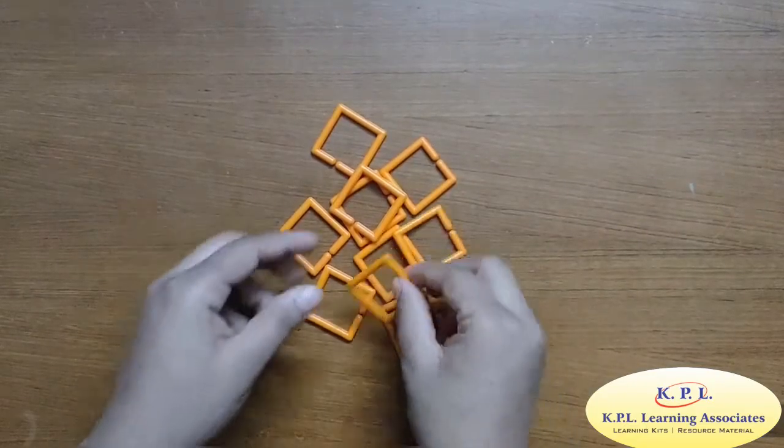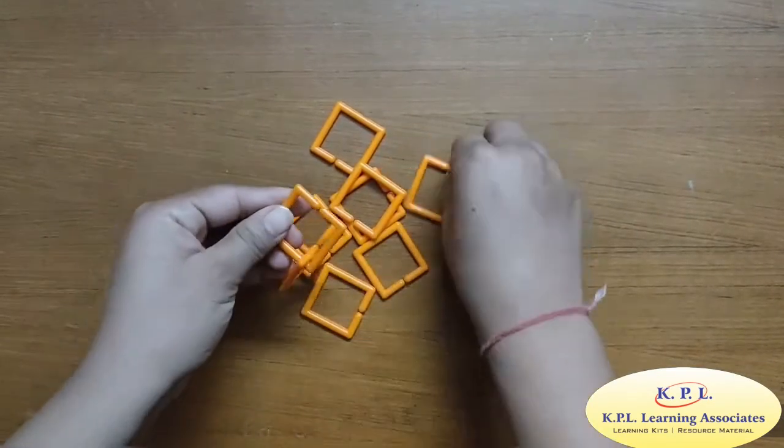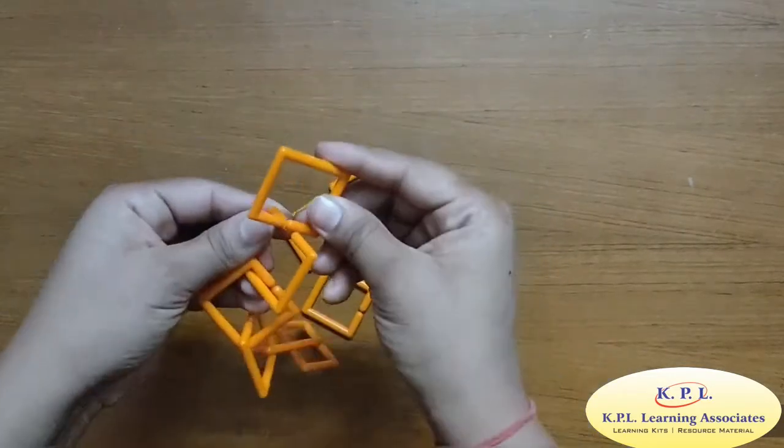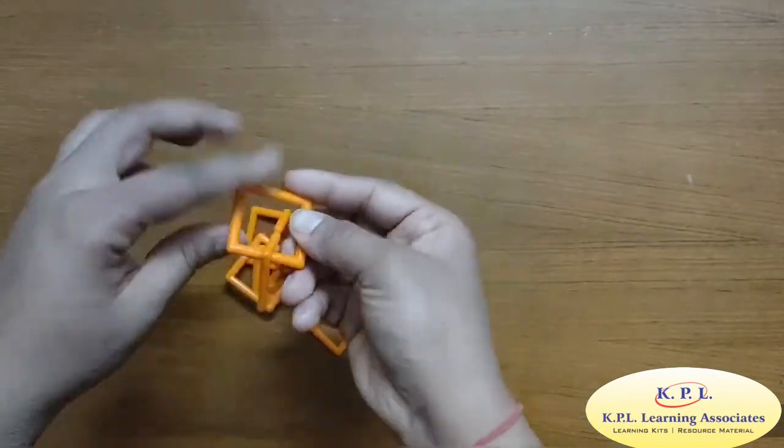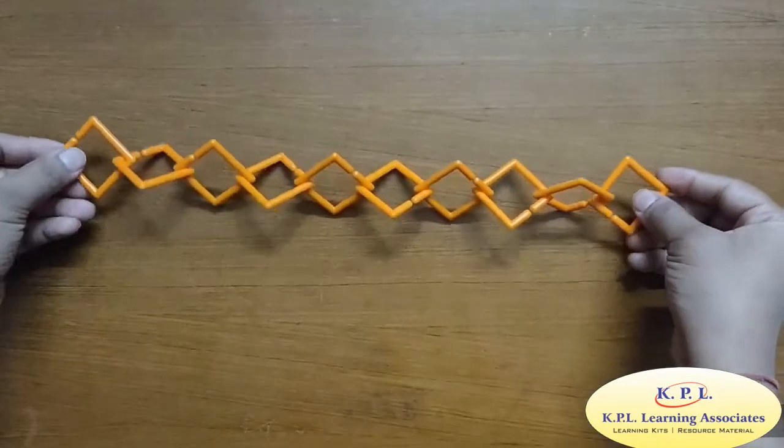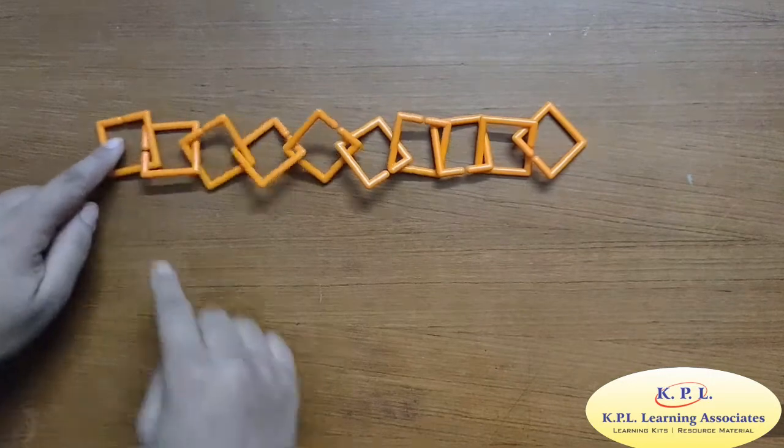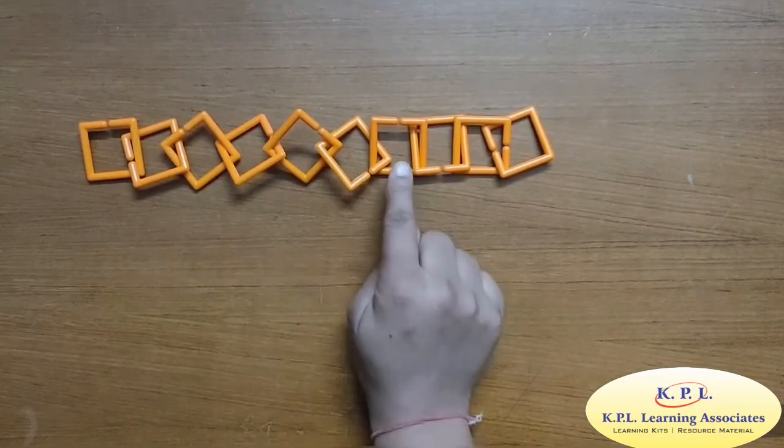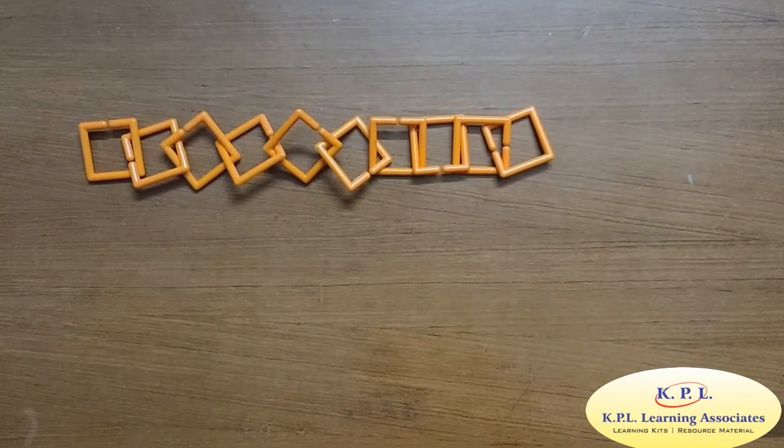We can connect all the squares. Hey, they look like a chain. Let us count how many squares we have connected. 1, 2, 3, 4, 5, 6, 7, 8, 9, 10. There are 10 squares of orange color.